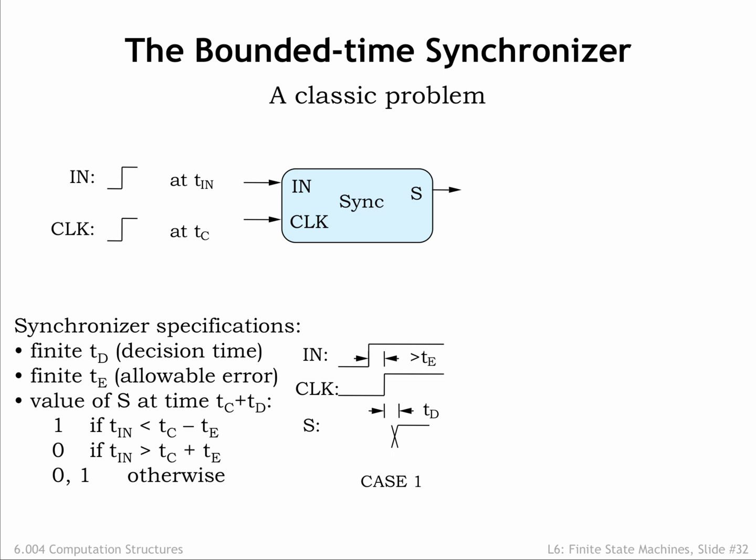If IN's transition happens sufficiently before clock's transition, we want the synchronizer to output a 1 within time td after clock's transition. And if clock's transition happens sufficiently before IN's transition, we want the synchronizer to output a 0 within time td after clock's transition.